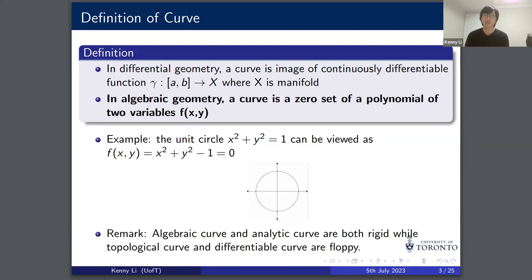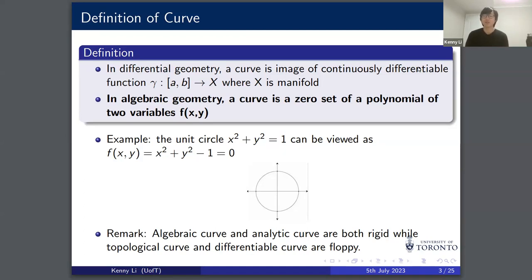There is a deep connection between algebraic curves and analytic curves because in some sense they are both rigid. Rigid here means when you try to define a function locally near a point on the curve, the overall behavior of the function over the curve is almost determined by the behavior near that point. This is not the case for topological or differentiable curves — for example, a bump function on a real manifold can be locally valued one but equal to zero everywhere else, so those manifolds are floppy. Later on, you will see that an elliptic curve is more or less like a complex torus, which is an analytic manifold.